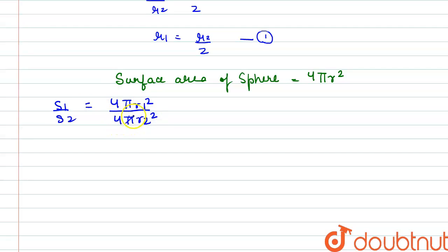Canceling out 4 pi, we have the ratio of the surface areas as r1 square by r2 square. And we have the value of r1 as r2 by 2, so if we write here r1 as r2 by 2 square divided by r2 square,